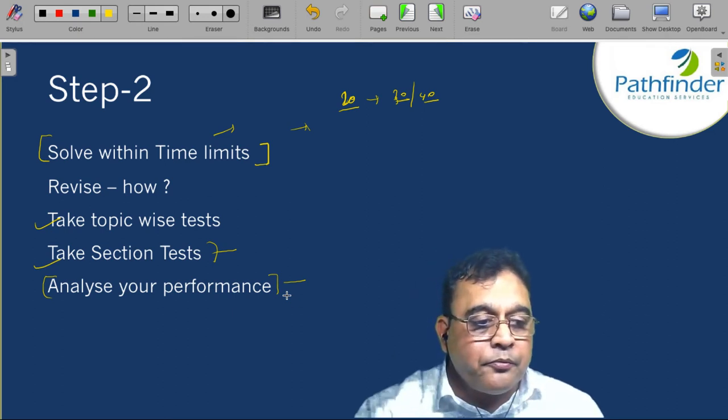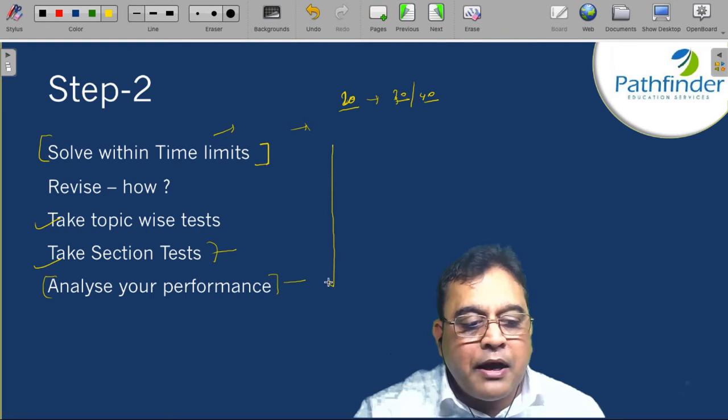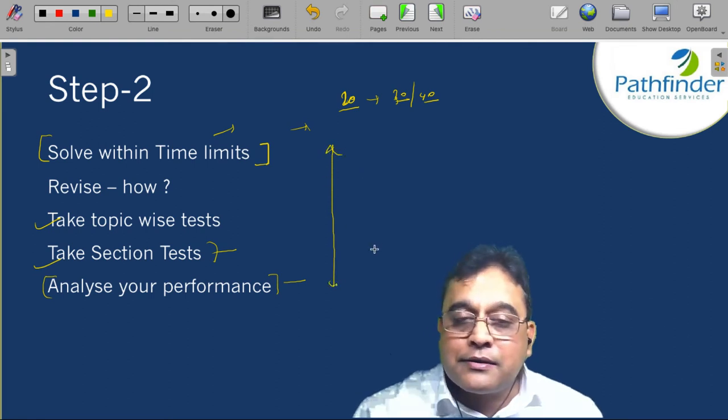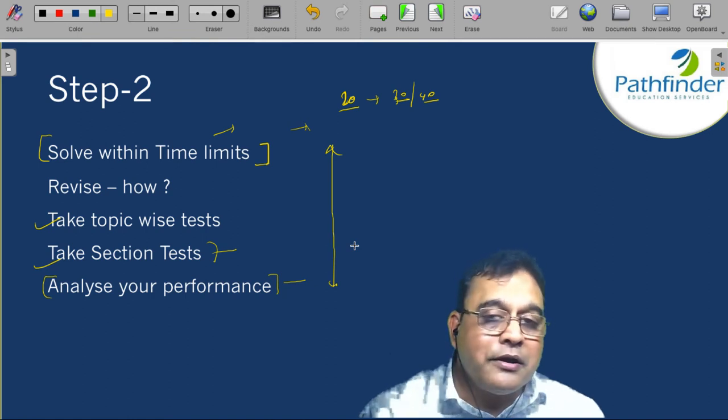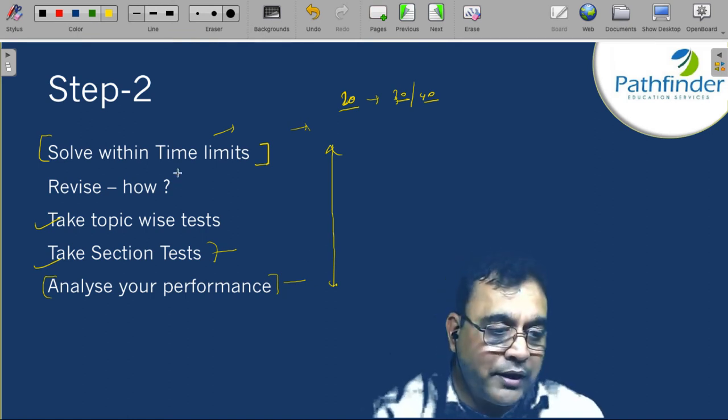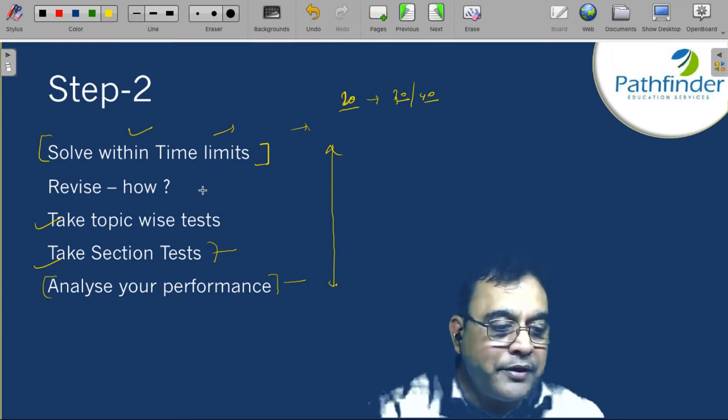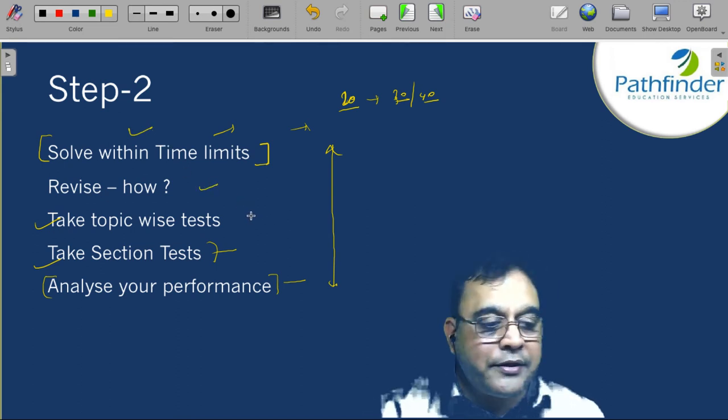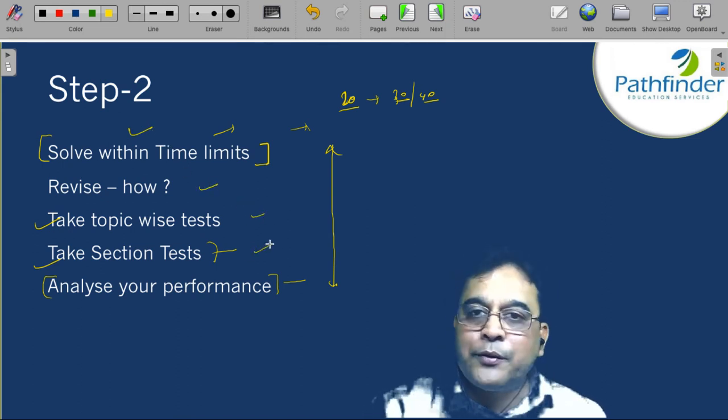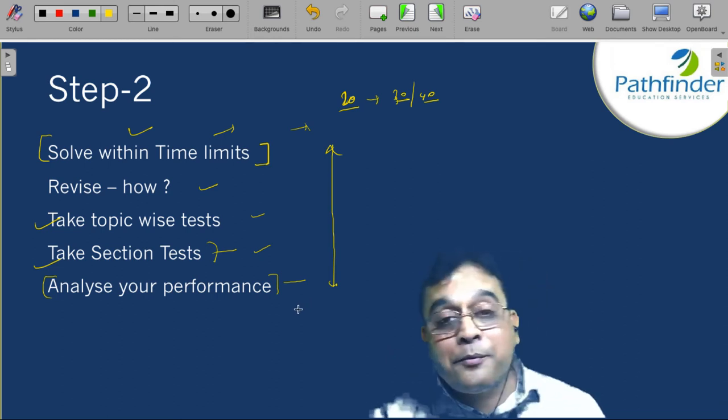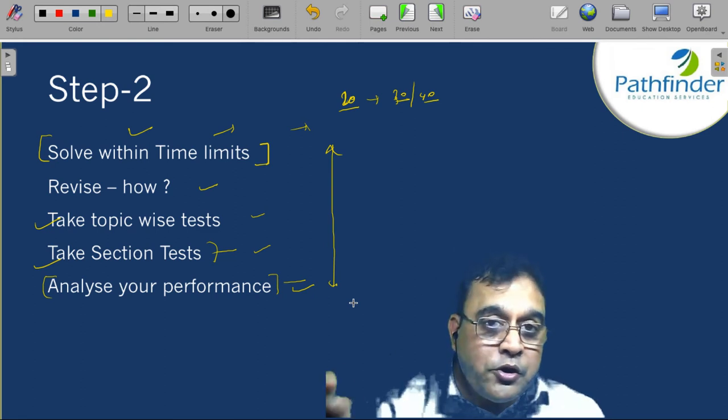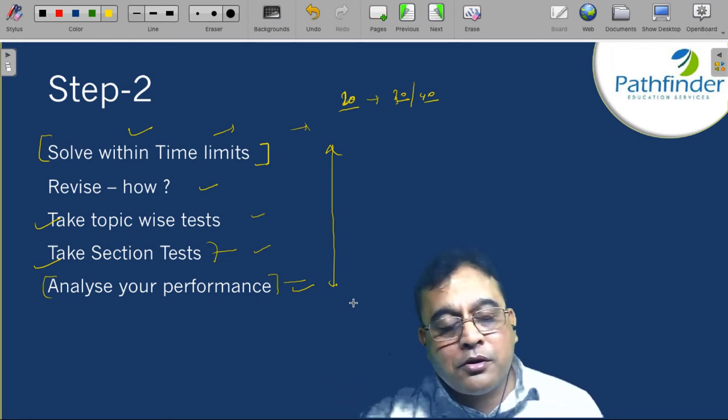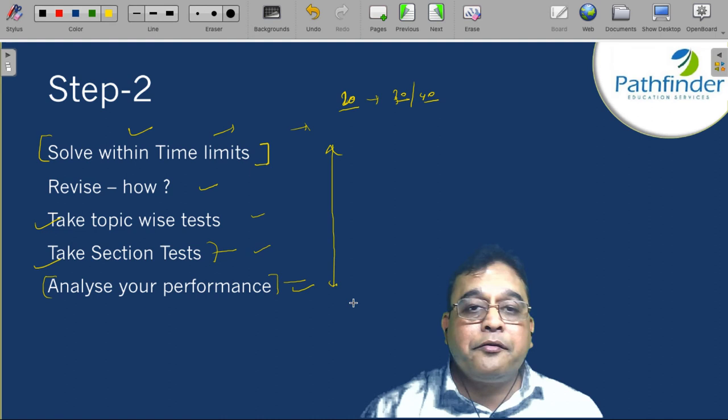So, make sure that you do all this in a planned or a methodical manner. For the best outcome, you need to do it in a planned and a methodical order. So, what are these? Solve within time limits, revision also within time limits, topic wise and section wise test. And after topic wise and section wise test, you must learn to analyze your performance to find out your areas of problem or your areas of difficulty or which areas you need most help on.